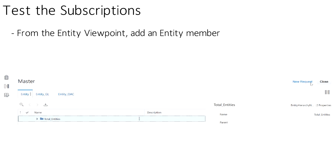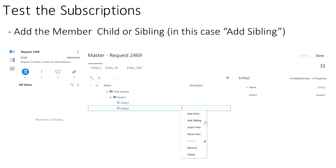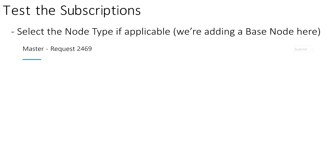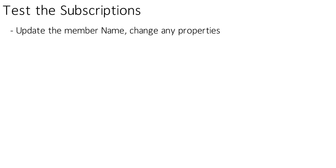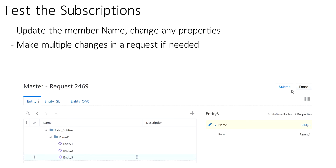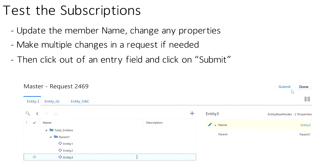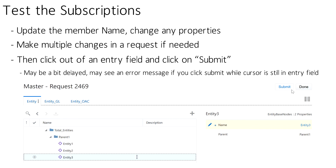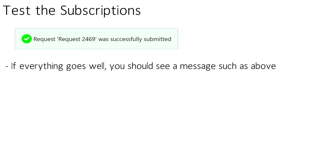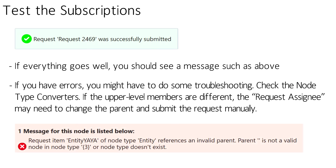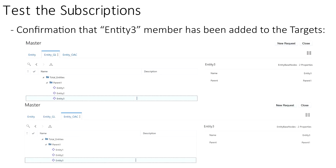Now that everything is set up, we can test out the subscriptions. Go to the Entity Viewpoint from the Master Application and click the New Request button on the right. Expand the Entity hierarchy and add a base member as a sibling. Select Entity Base Nodes as the node type, then update the member name to Entity 3 and click Submit. You may want to put your cursor someplace outside the yellow box before hitting Submit — sometimes there's a little delay and it can cause an error message. A green check is good. If you receive errors, the messages should come up or you can look for them in the request details. Now you can go to each of the target viewpoints and confirm that the new member was added.